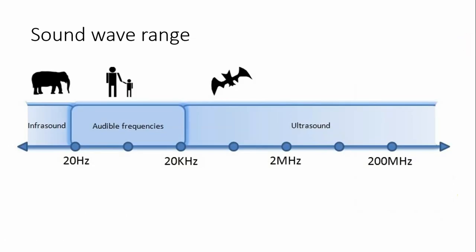Sound waves come in all sorts of frequencies. Our ears can pick up between 20 hertz and 20,000 hertz — this is our audible frequency range. Elephants communicate over long distances using infrasound — very low frequencies below our audible range — whose ears are attuned to pick those up. On the other side, we have ultrasound, which is also out of our audible range.